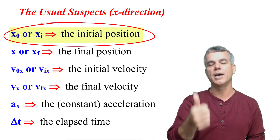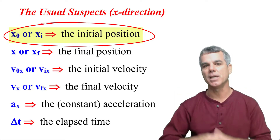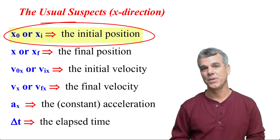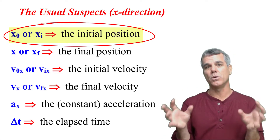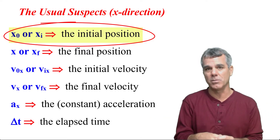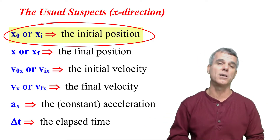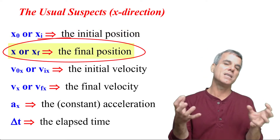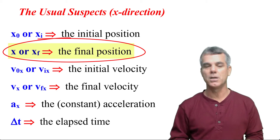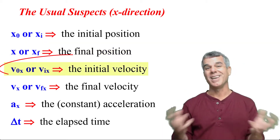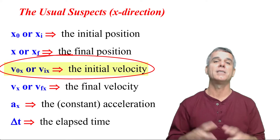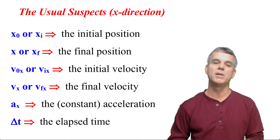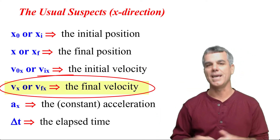Initial position is just where the object is at the beginning of that event. Generally, we refer to the beginning as t equals zero, but it does not have to be. So initial position is just what is my value of x — if we're talking about horizontal motion — where's the object relative to the origin at the beginning of the event? Final position is at the end of the event. After the elapsed time has occurred, what is the object's final position? Initial velocity is just the velocity of the object at the beginning of that event, at t equals zero or my start time. Final velocity is just the velocity that I end with.